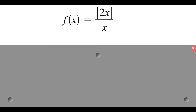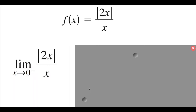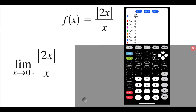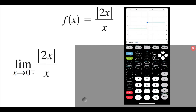So if we look at the function f(x) equals the absolute value of 2x over x, we're going to look at that limit first on the left-hand side — the limit of this function as x is approaching 0 from the left-hand side. I'm going to look at this one graphically. On my calculator I already have that function typed in, and if I hit graph I get a picture. As I trace on my graph getting closer and closer to 0 from the left-hand side, I notice that the y value is always negative 2. So the limit from the left-hand side is negative 2.